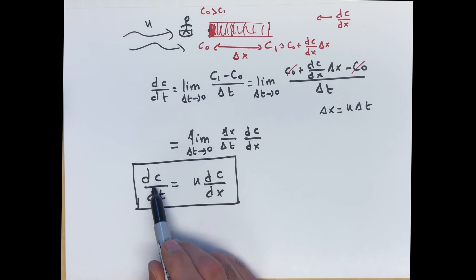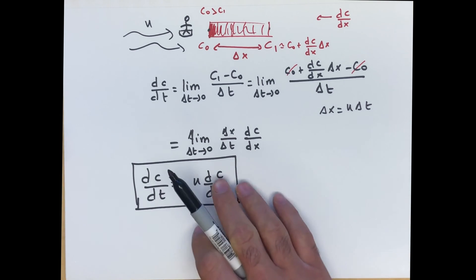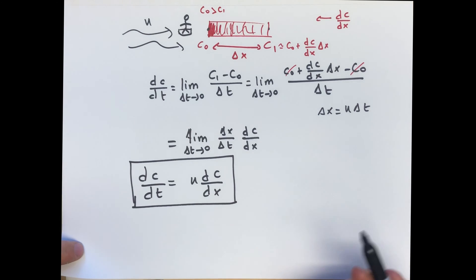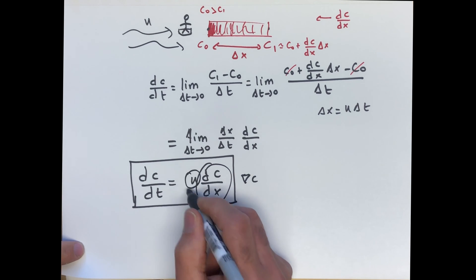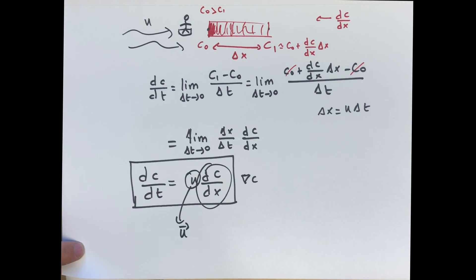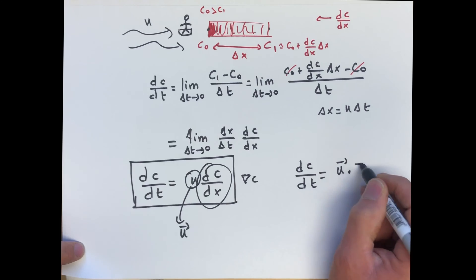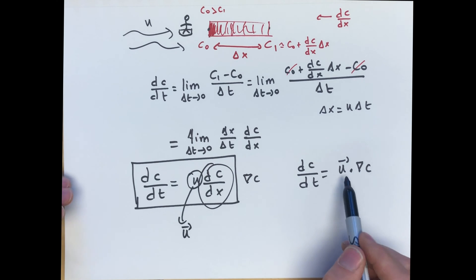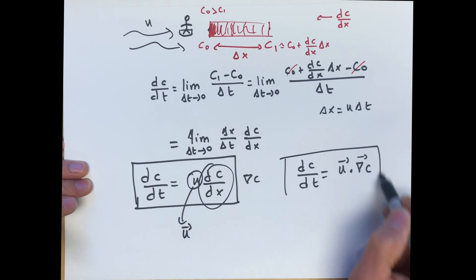This is the relation between what the person in the Lagrangian frame is measuring compared to the actual distribution of the concentration gradient. When we extend this to 3D, dc/dx turns into the gradient of concentration and U turns into the velocity vector field, giving dc/dt = U dot grad C, or equivalently U·dc/dx + V·dc/dy + W·dc/dz.